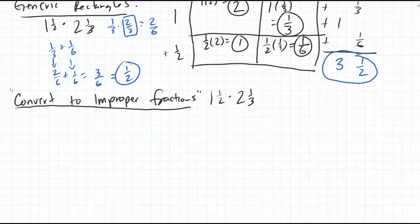Instead of drawing generic rectangles, we're going to convert them to improper fractions. For 1½, we know that equals 1 times 2 is 2 plus 1 is 3/2. For 2⅓, we know we have 2 wholes - each whole is made of 3 pieces, so from those wholes we have 6 total plus 1 more piece, so we have 7 pieces out of 3. Here we have 3/2, here we have 7/3, and we just multiply them across. 3 times 7 is 21, 2 times 3 is 6.